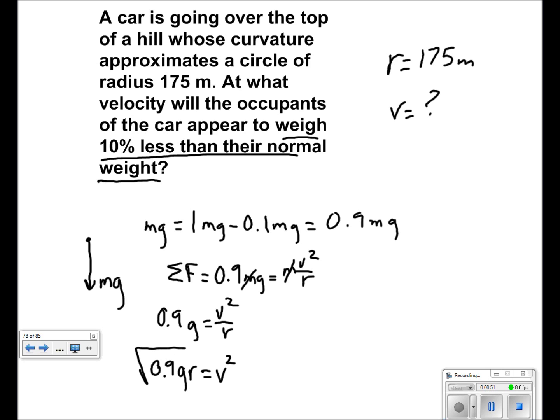We take the square root of both sides and plug in the values. We get v is equal to the square root of 0.9 times 9.8 times 175. And the answer is 39.5 meters per second.